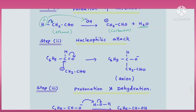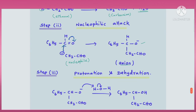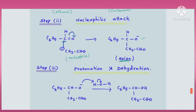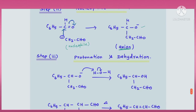In the second step, the carbanion of the aliphatic aldehyde reacts with the aromatic aldehyde, benzaldehyde. The carbanion acts as a nucleophile — it is negatively charged and electron-rich, so it attacks the carbonyl carbon of benzaldehyde, which is an electron-deficient center. The bond pair between carbon and oxygen moves to oxygen, forming a single bond C–O⁻. The carbanion carbon forms a new bond with the carbonyl carbon, and the C=O becomes C–O⁻, giving an anion.